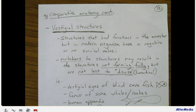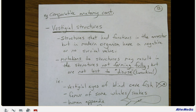Vestigial structures: structures that had function in ancestors, but in modern organisms have a negative or no survival value. Mutations to structures may result in the structures not forming fully, but they are not lost to disuse — that would be Lamarckian. Examples include: vestigial eyes on the blind cave fish, femur on some whales and snakes, and the human appendix.